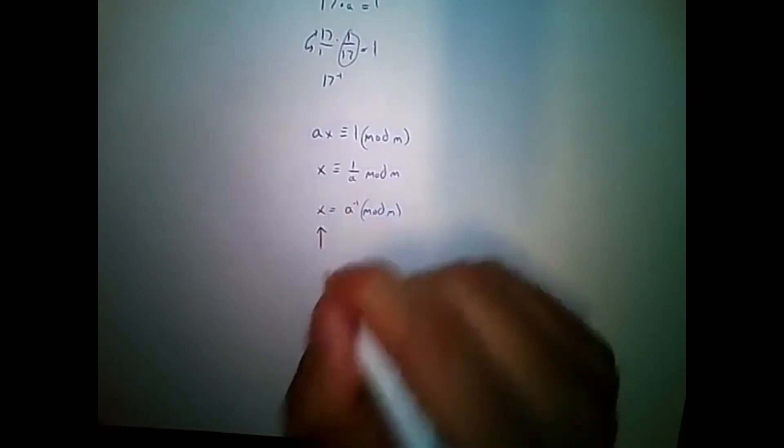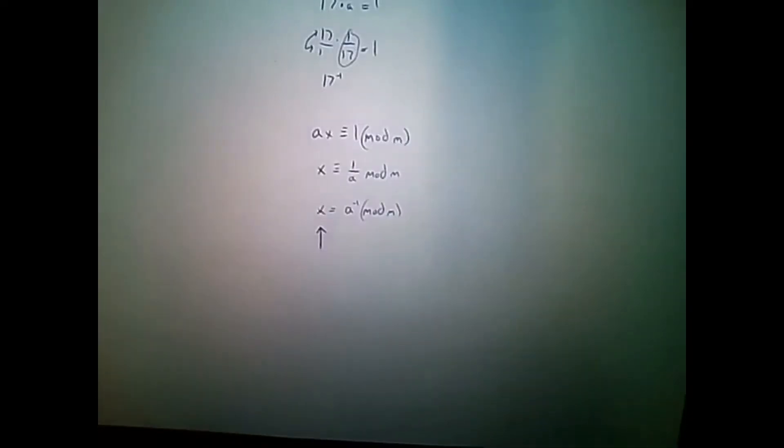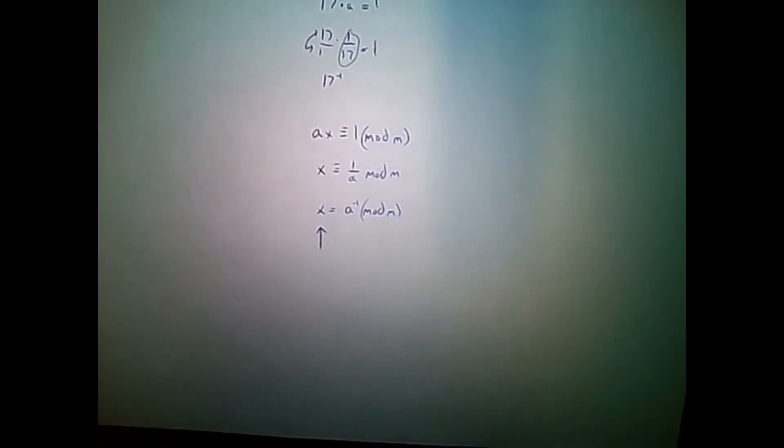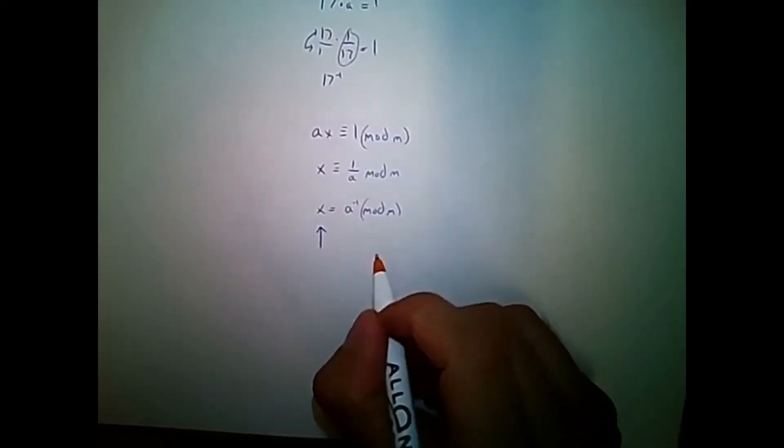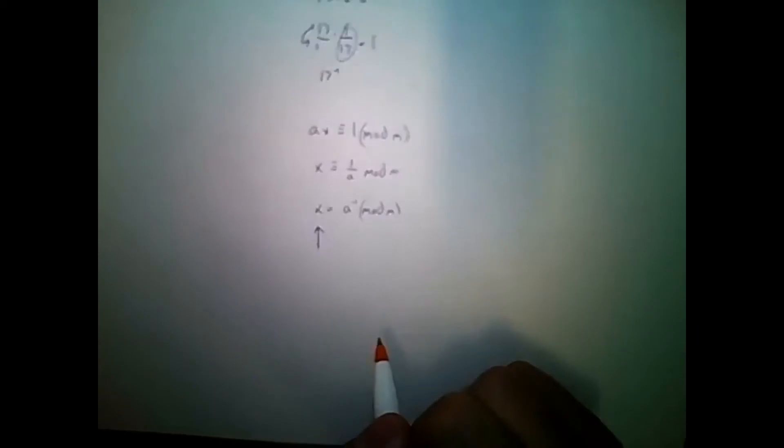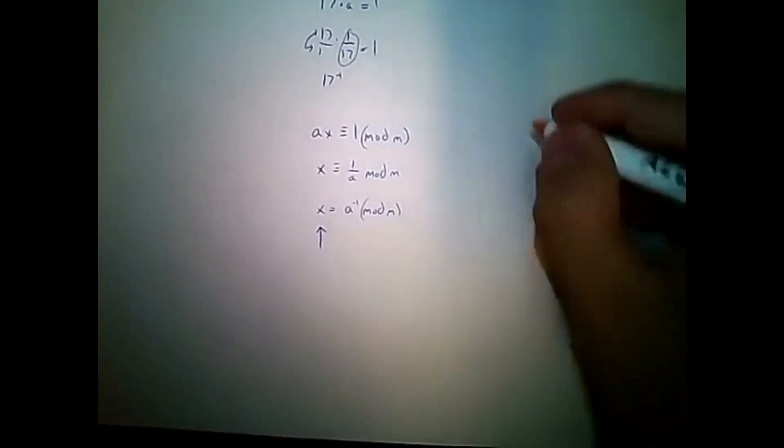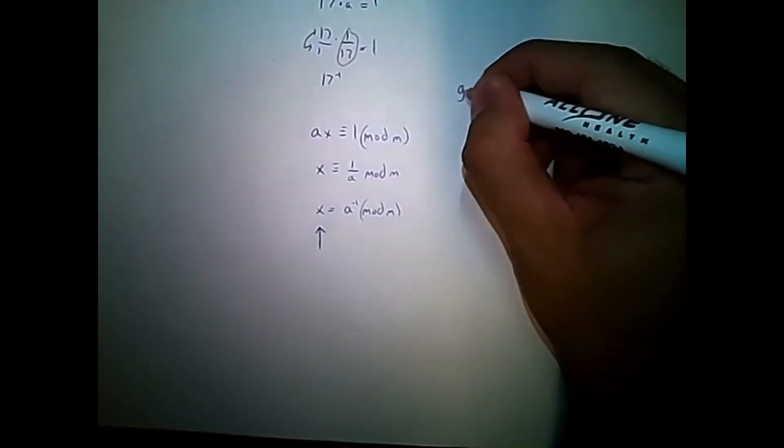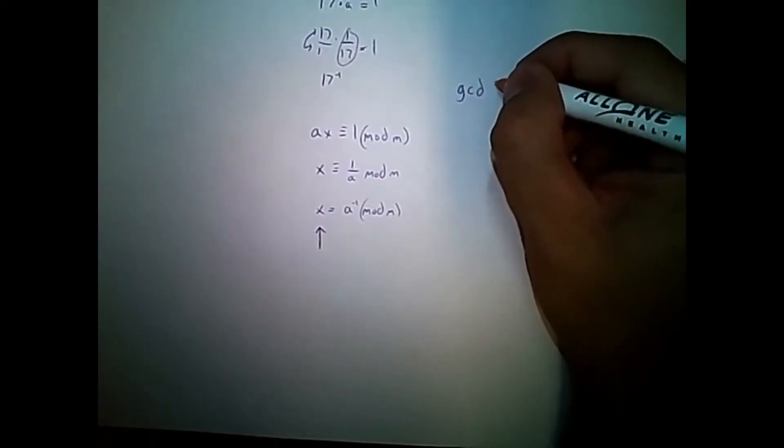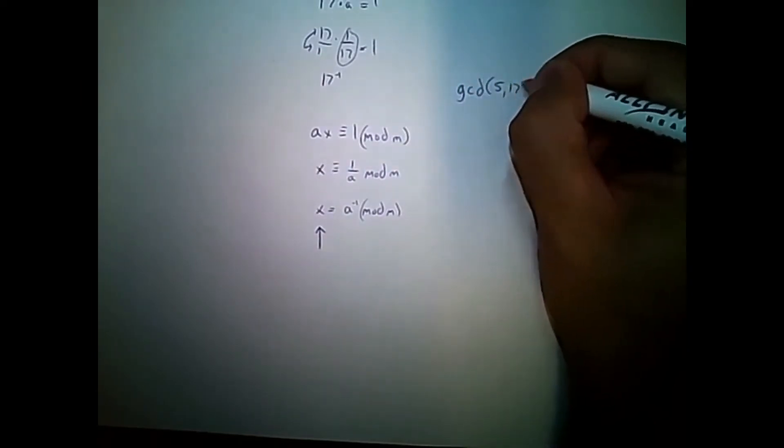That gives us our multiplicative inverse. This shows us the a of minus 1 mod m. Okay, so let's pick two numbers here. I'm going to pick 5 and 17. So, the GCD of numbers 5 and 17.